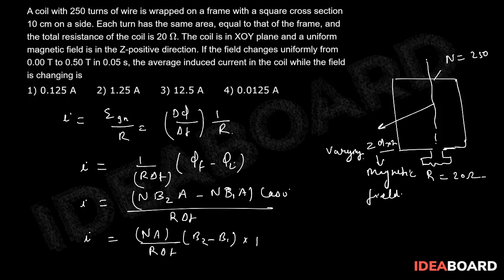So now if we put the values, N is equal to 250, area of cross section is 10 centimeters, so area will be A squared which will be 10 to the power minus 1 squared which will be 10 to the power minus 2 meter squared.